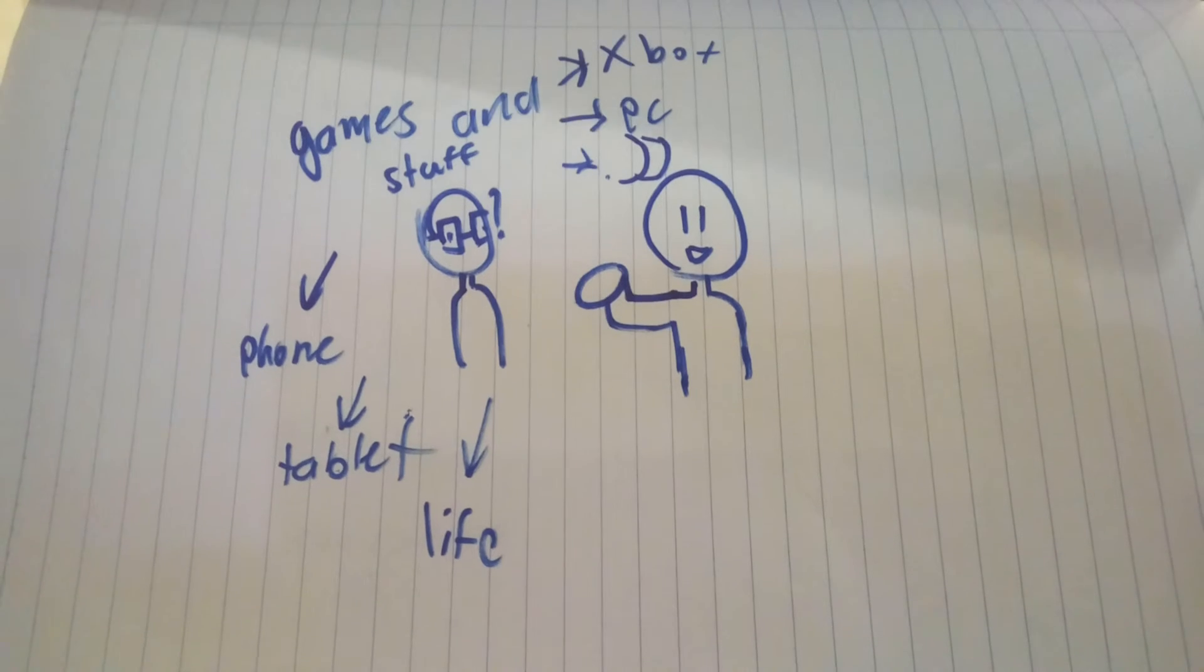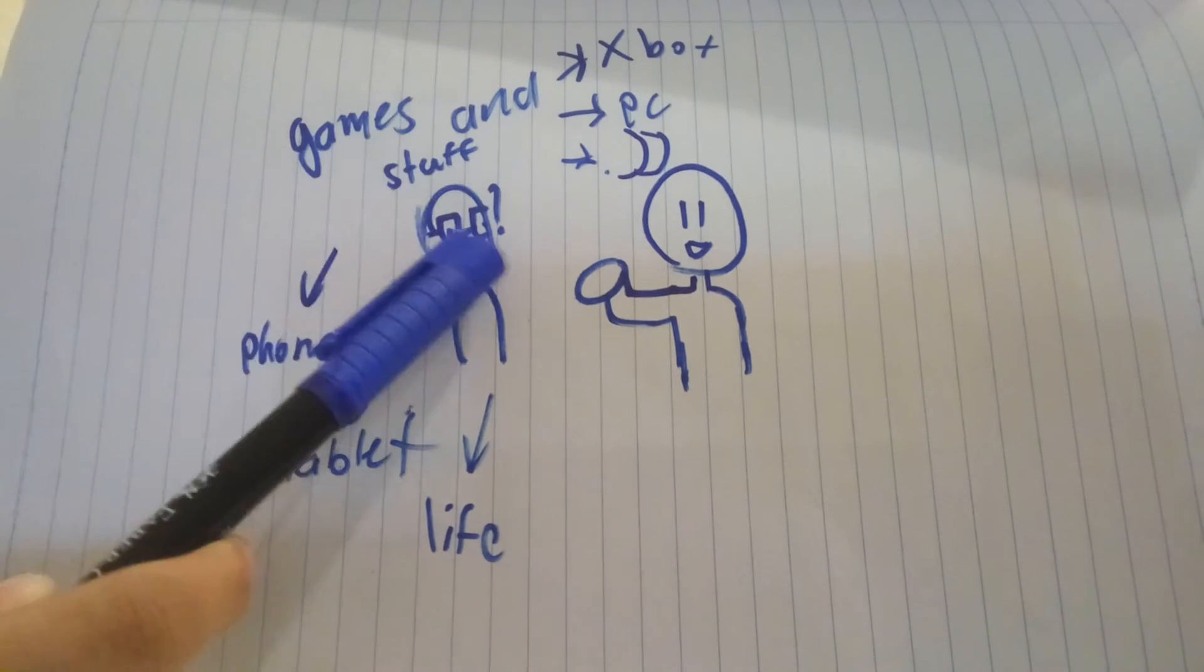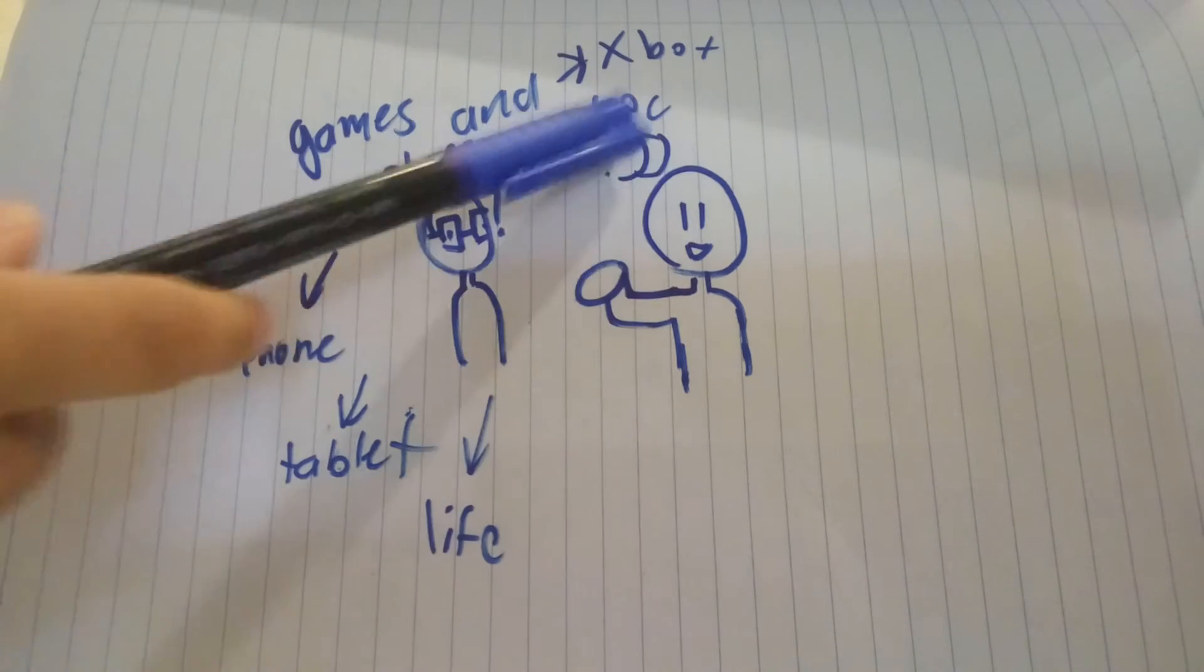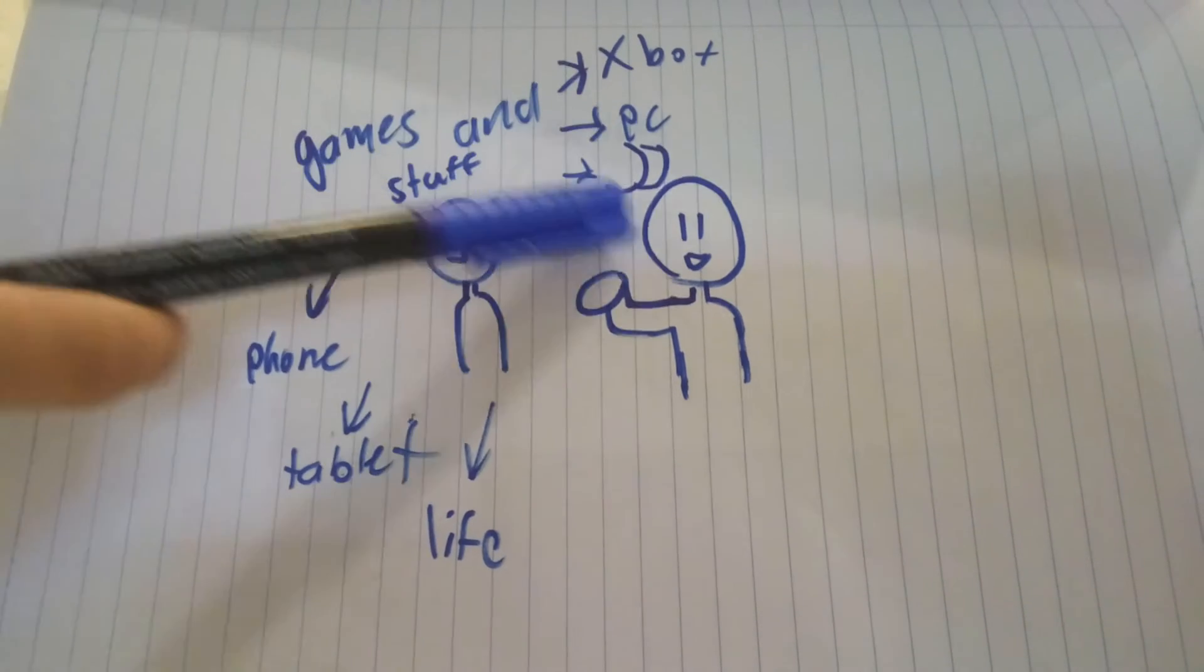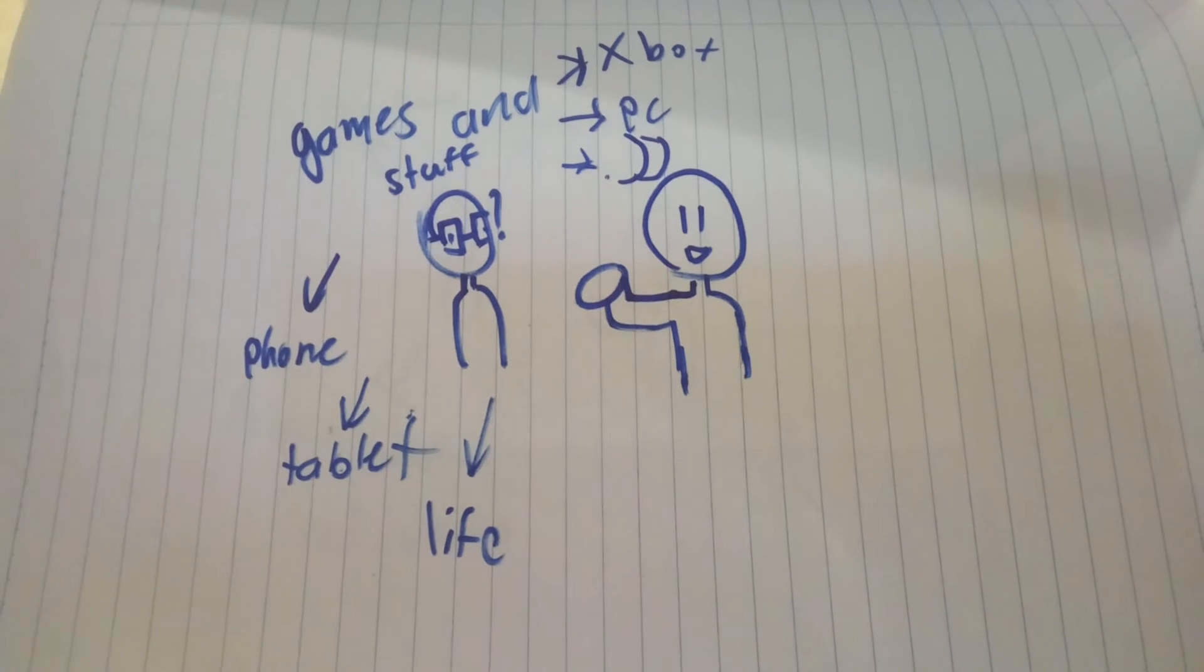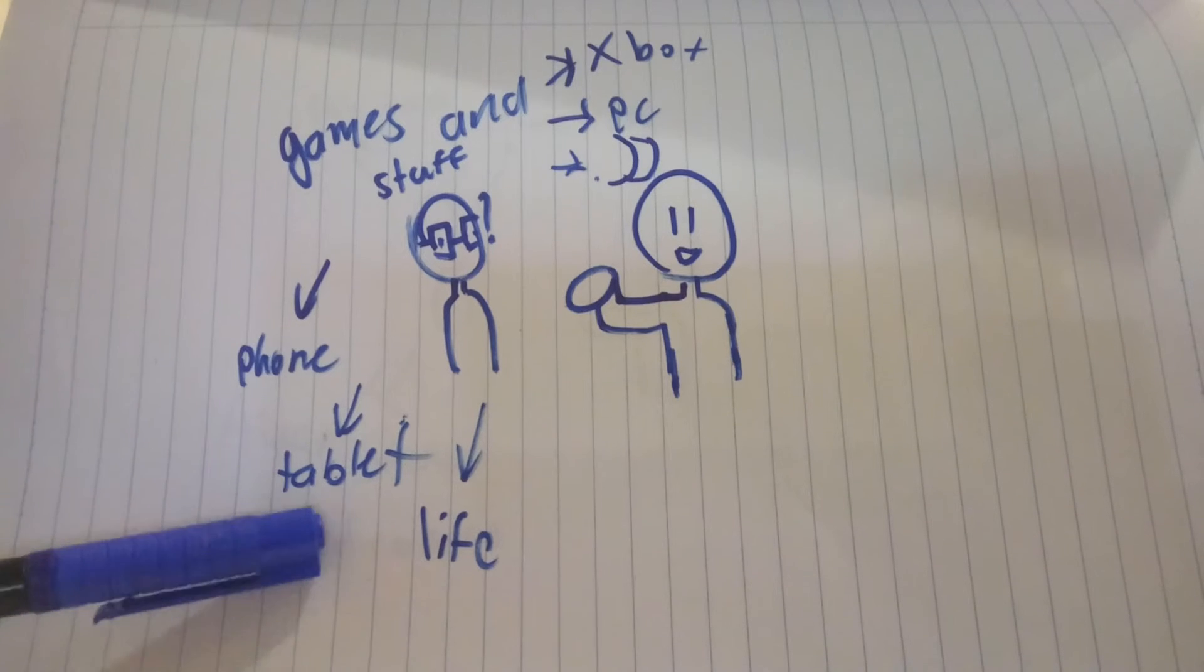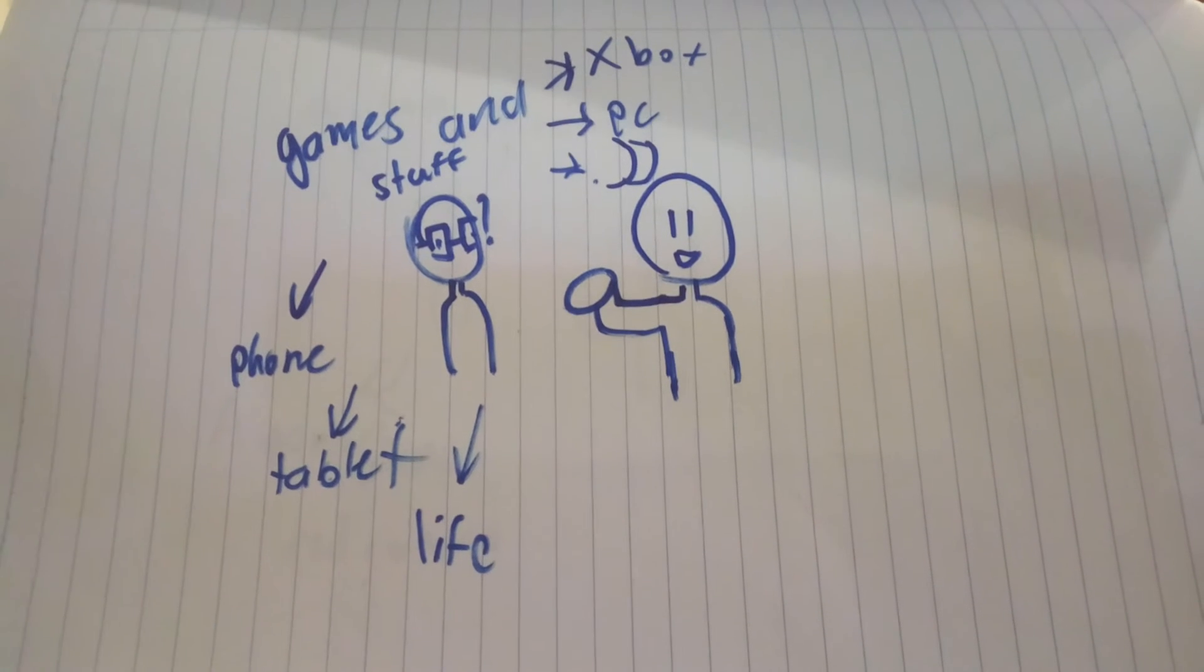So Adam is the one who likes to play games and stuff. He has an Xbox that was a PC, he has a phone, and I think it's a tablet, but he has to share, and he also has a life.